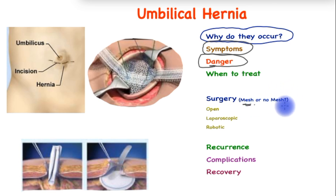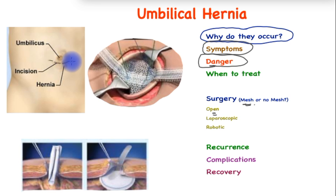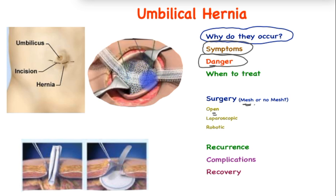Smaller hernias could just be sutured and have comparable outcomes. The techniques include open repair, as shown in this cartoon. An incision is made just below the belly button. The hernia sac is reduced back into the cavity, and in this instance you can see a mesh being inserted and sutured above the lining of the abdomen to avoid direct contact with the abdominal contents. Then the surface is repaired.